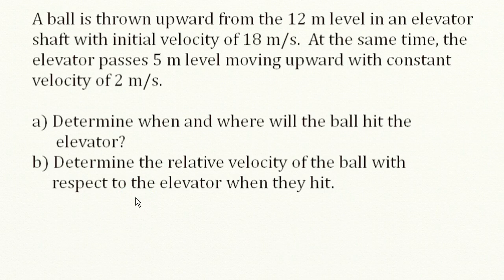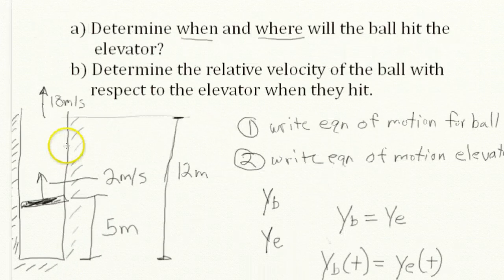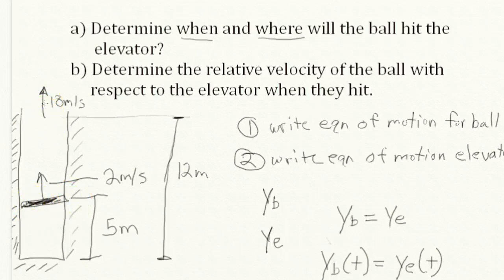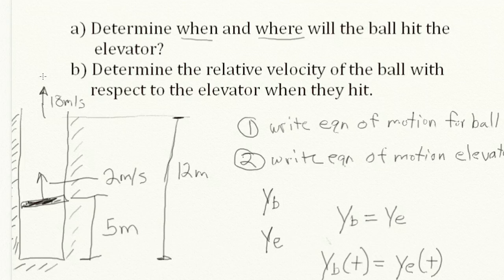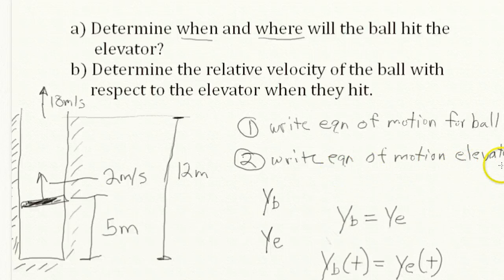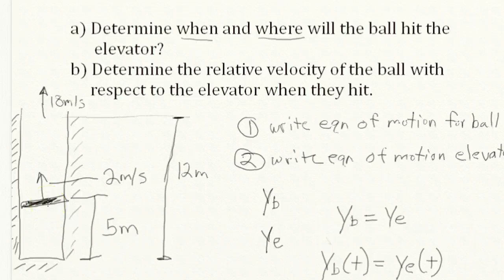Let me sketch out the problem. Here's the elevator shaft, we have the elevator platform, and here's the motion of the ball. The ball was thrown upward from the 12-meter level — so here I've marked the 12-meter level — with an initial velocity of 18 meters per second, under the gravitational field. The elevator starts at the 5-meter level at t equals zero and moves 2 meters per second upward.